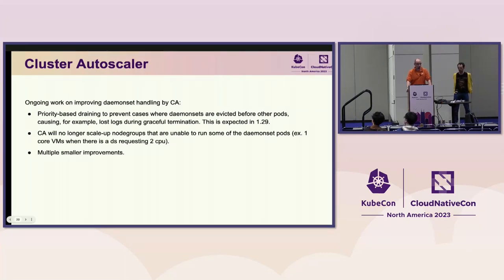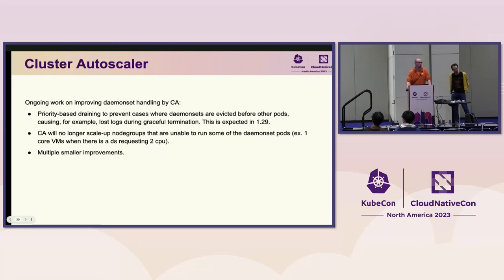Ongoing work also includes handling daemon sets properly during node drain. While draining a node, it's important to remove pods in a reasonable order. Daemon set pods may provide log-pushing capability, and it would be bad to delete those before the actual workload pods — logs written in the last moments of the pod lifecycle could be lost. In version 1.29, we are introducing priority-based node draining to ensure every bit of logging written during shutdown is correctly pushed so no data is lost.